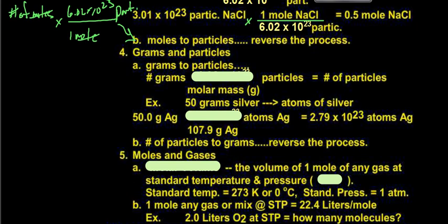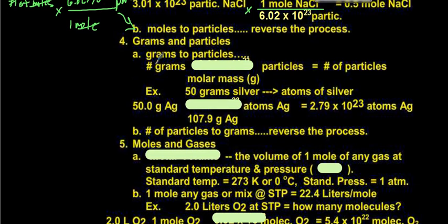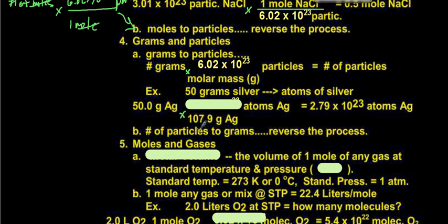Now we go grams to particles — this is a little trickier, because we have to convert grams to moles and then from moles to particles. We take our number of grams, divide by the molar mass to get moles, then multiply by Avogadro's number to get particles. For example, 50 grams of silver: we divide by the molar mass of silver (107.9 g/mol), then multiply by 6.02 × 10²³, giving us 2.79 × 10²³ atoms of silver.